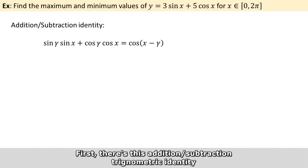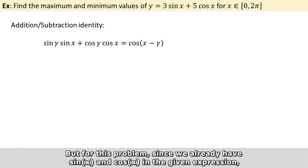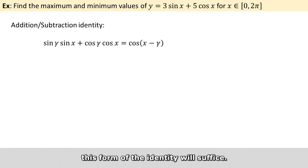First, there is this addition subtraction trigonometric identity that combines two angles into one. It has a few variations, but for this problem, since we already have sin x and cos x in the given expression, this form of the identity will suffice.